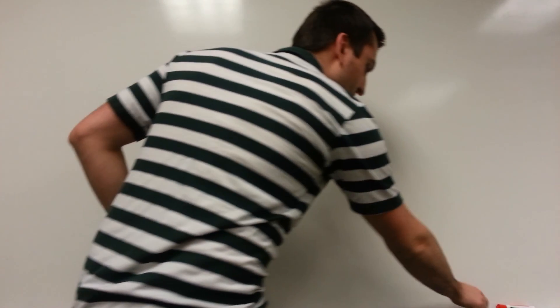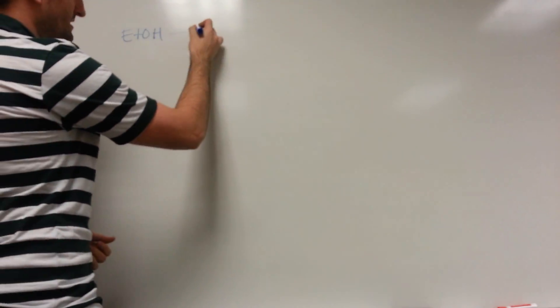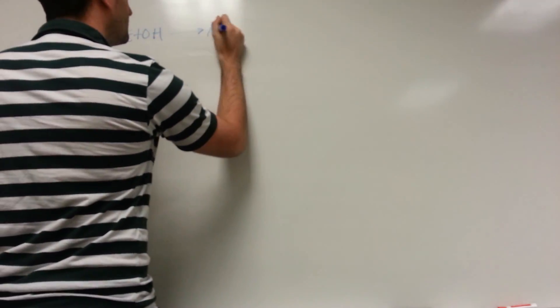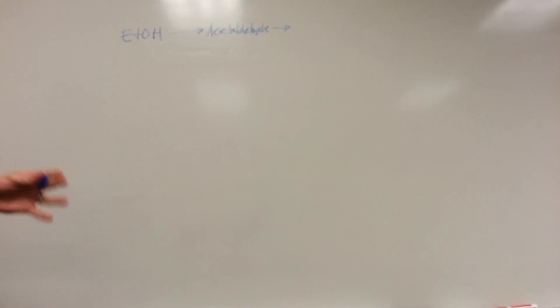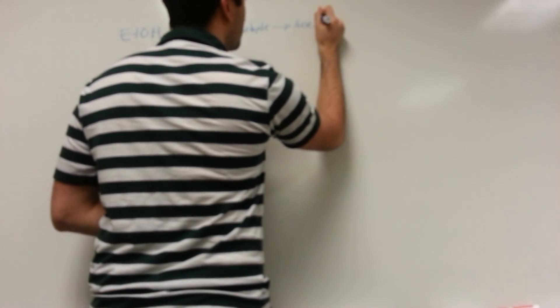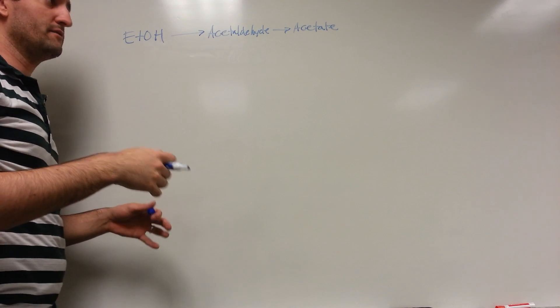Today we're going to talk about alcohol and alcohol metabolism specifically. What happens is ethanol (EtOH) gets broken down by the body into different substances. Very basically, we go from ethanol to acetaldehyde, which gets further broken down by enzymes into acetate, and that can get further broken down into acetyl-CoA, which can feed into the TCA cycle and be further processed.